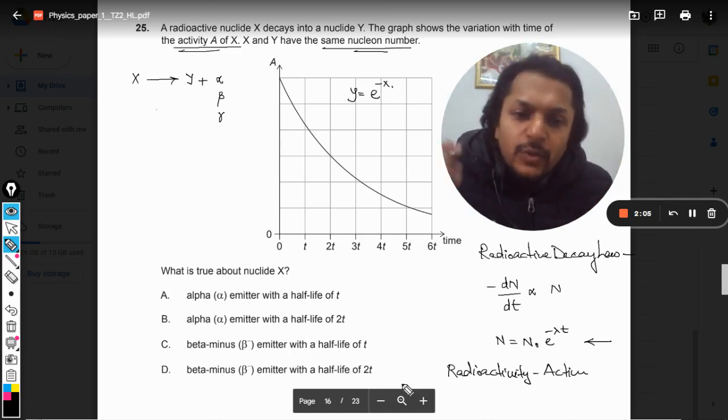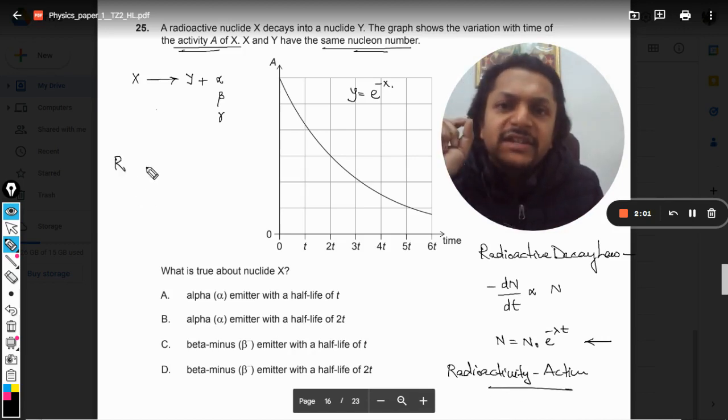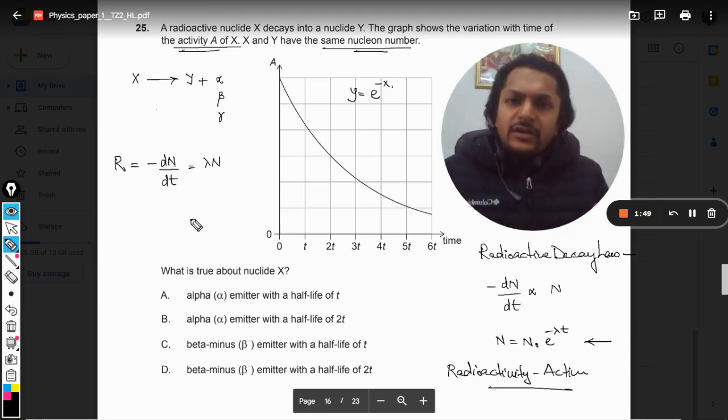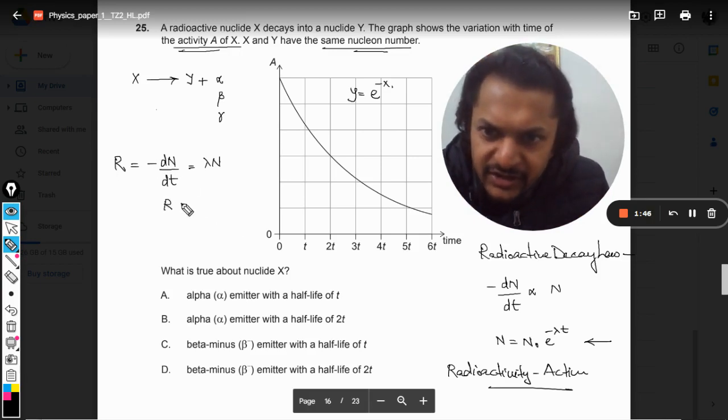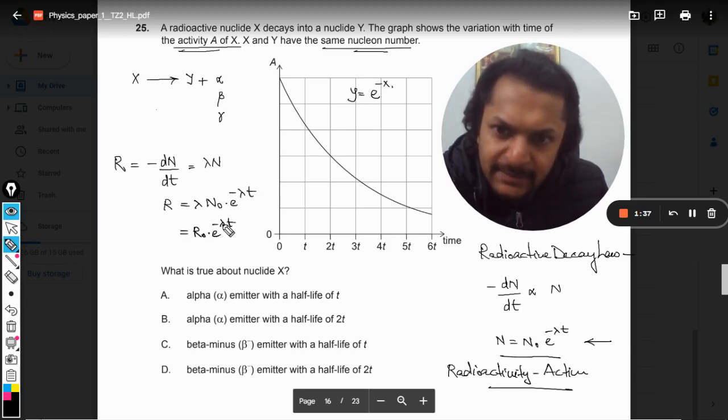So what is the activity? This activity is generally written as capital R, and this activity is given by -dN/dt, which generally comes out to be equal to λN. From there we find this thing, so R = λN, and N is substituted as N₀e^(-λt), so this becomes R = R₀e^(-λt).